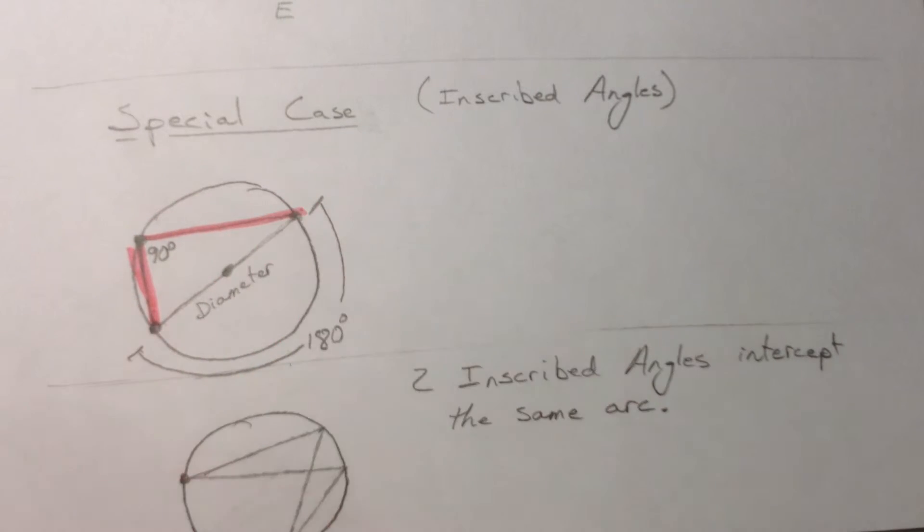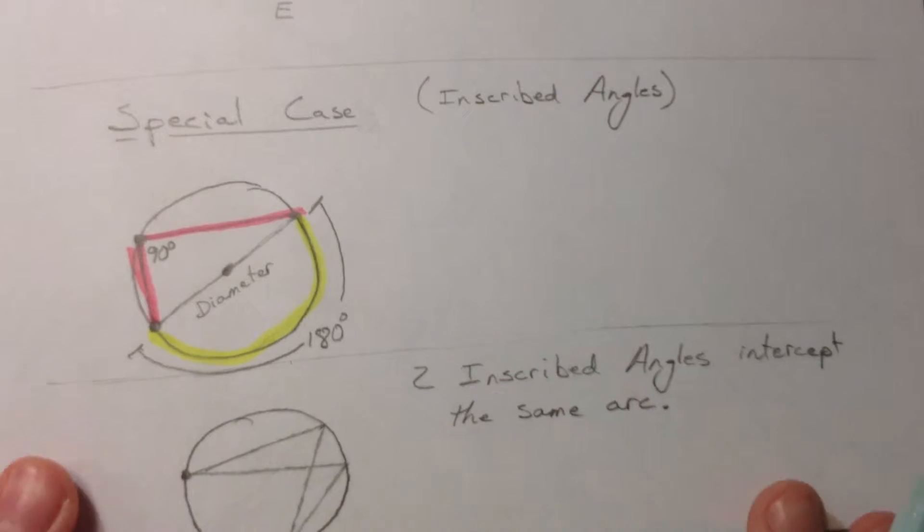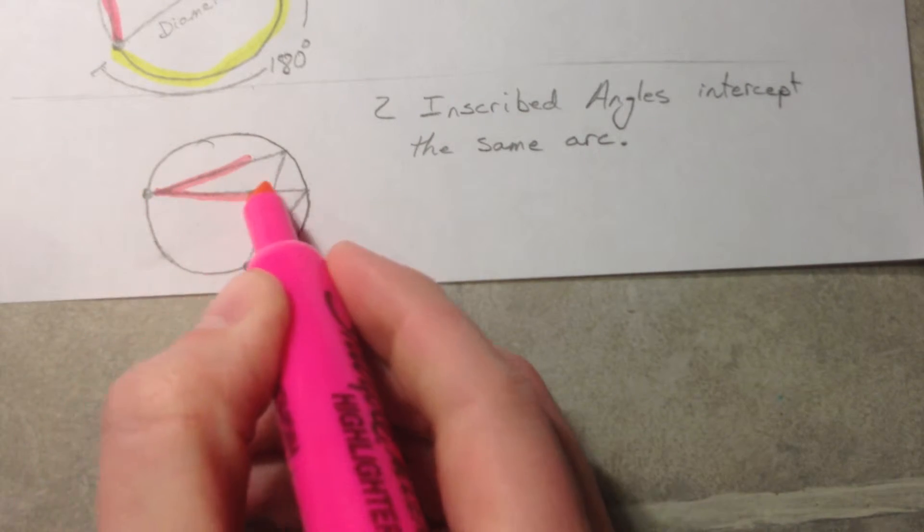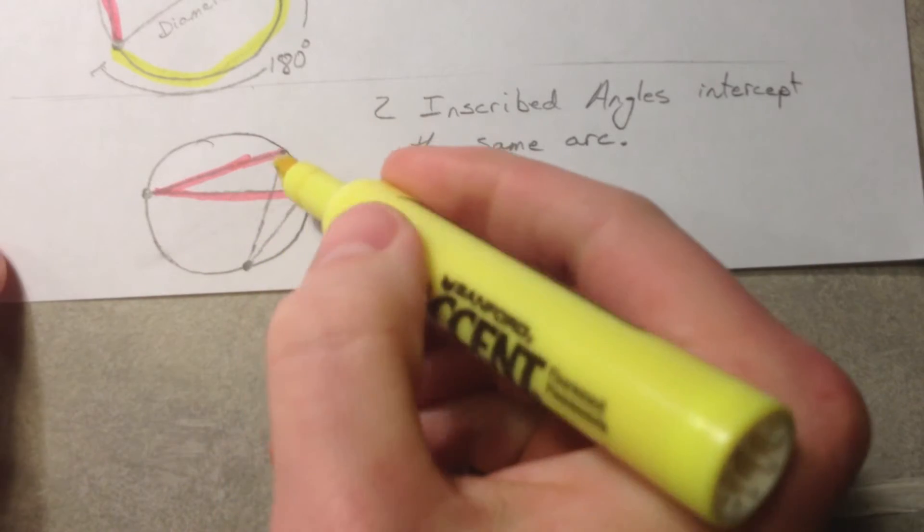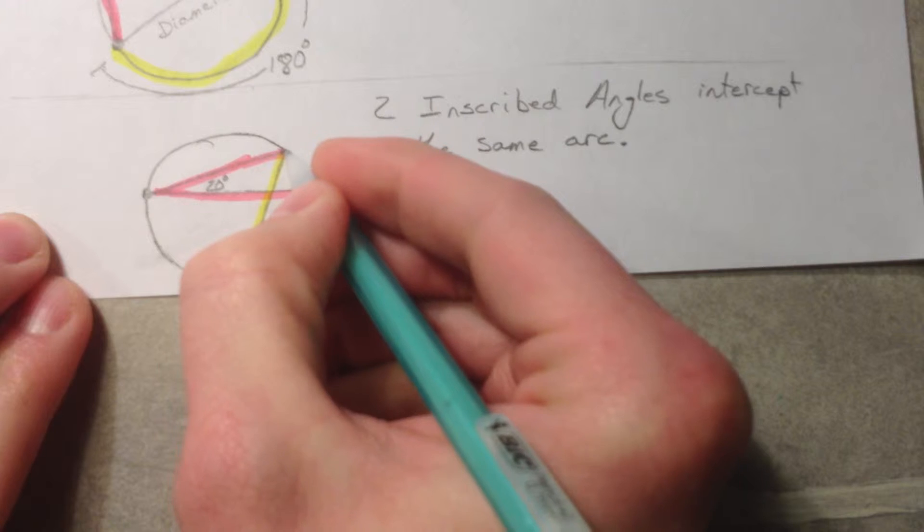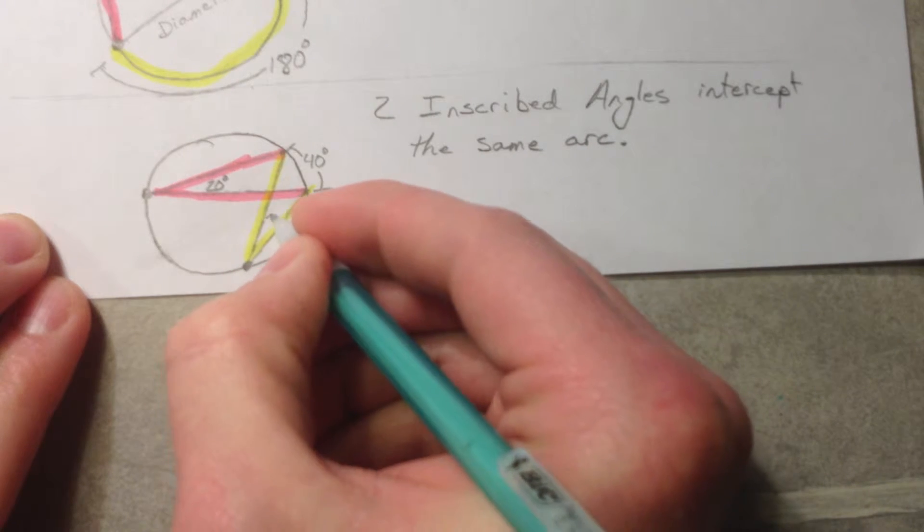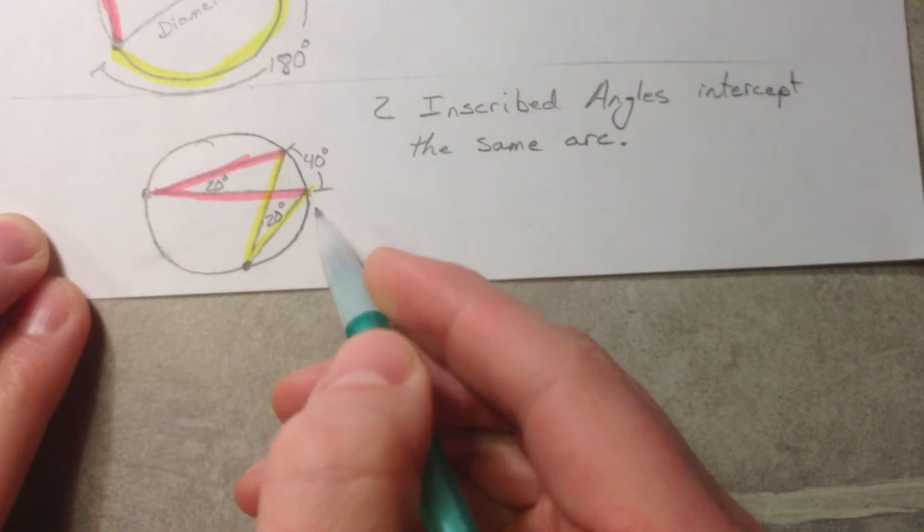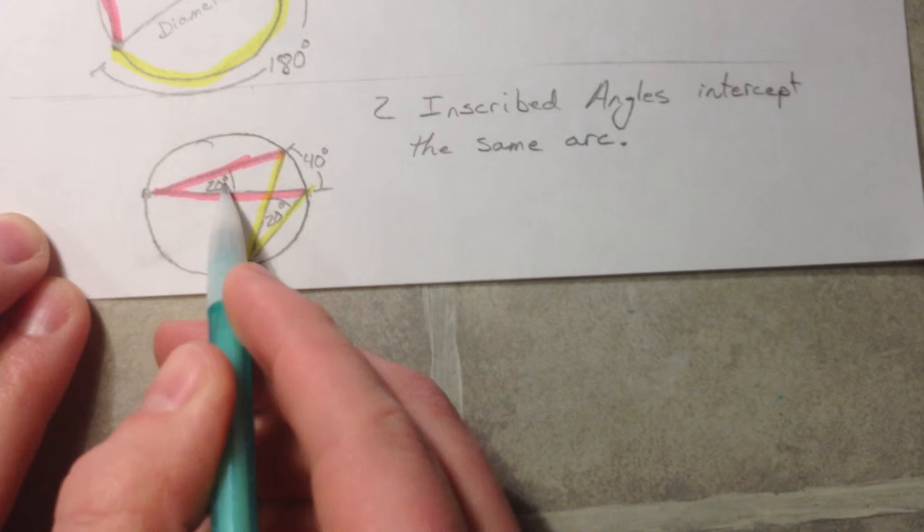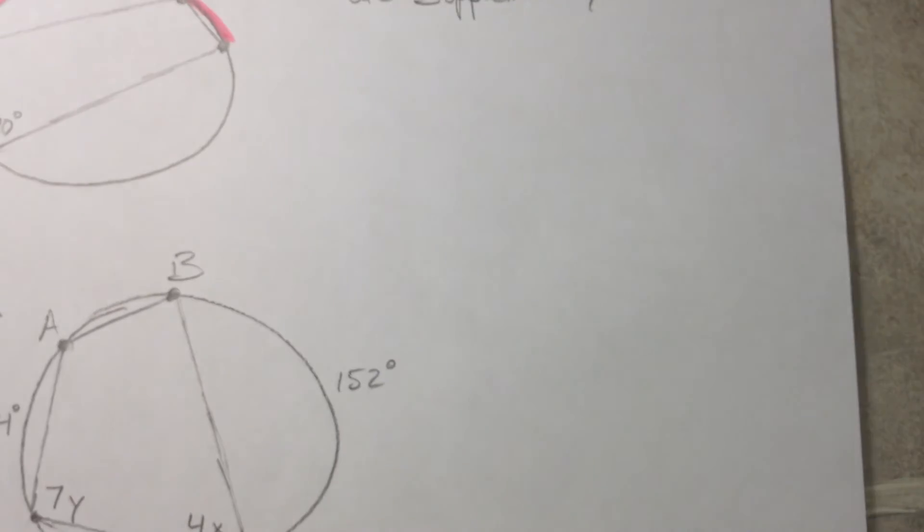Now what if two inscribed angles intercept the same arc? So we have this angle right here and this angle right here, and they intercept the same arc. For example if this angle was 20 then the intercepted arc would be 40, twice as big, and this yellow angle would be half as big because it's an inscribed angle that intercepts the 40. So no matter what, any time you have an inscribed angle that intercepts the same arc as another inscribed angle, those two angles will be congruent every single time.